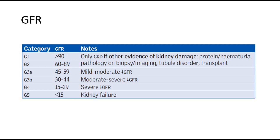First, we look at the classification of chronic kidney disease by GFR, the glomerular filtration rate, with the unit of ml per minute per 1.73 meter squared. It can be classified into G1 to G5 according to the GFR. G1 is if the glomerular filtration rate is more than 90. G2 is 60 to 89.